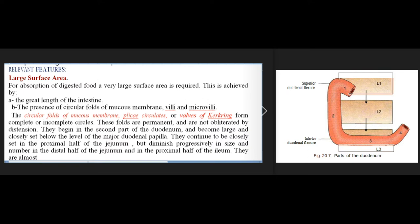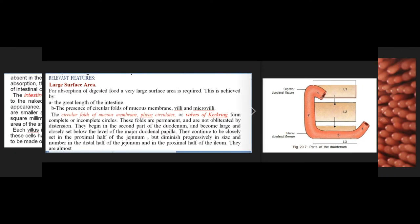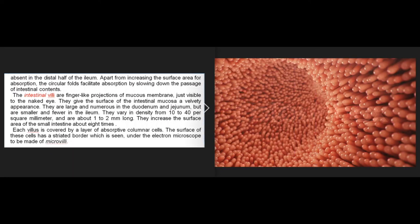The circular folds are permanent and are not obliterated by distension. They begin in the second part of the duodenum and become large and closely set below the level of the major duodenal papilla. They continue to be closely set in the proximal half of the jejunum but diminish progressively in size and number in the distal half of the jejunum and proximal half of the ileum, and are almost absent in the distal half of the ileum.